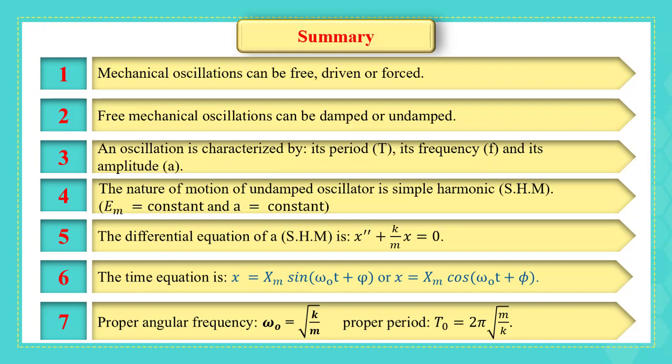The differential equation of a simple harmonic motion is x double prime plus k over m x equals to 0. The time equation is x equals xm sine or cosine omega 0 t plus phi, where the proper angular frequency omega 0 equals to the radical k over m, and the proper period t0 equals to 2 pi radical m over k.